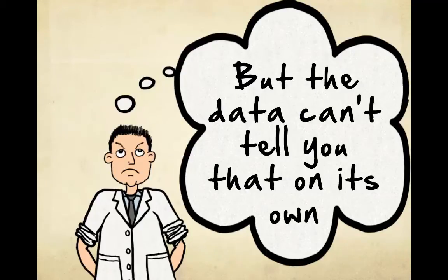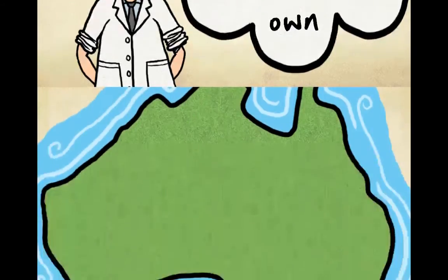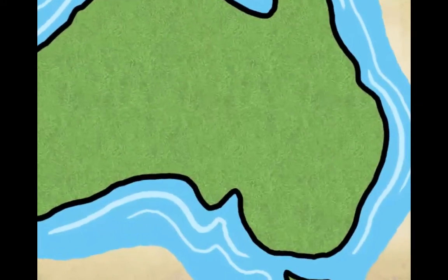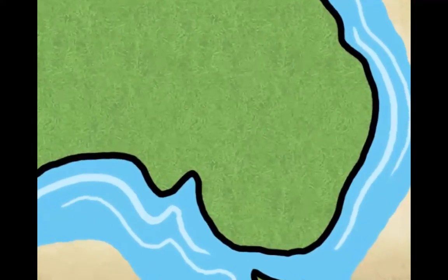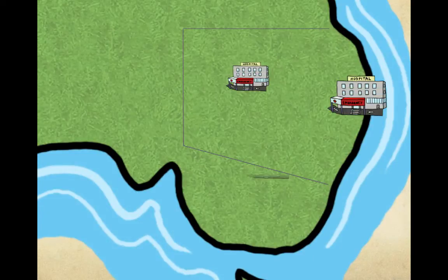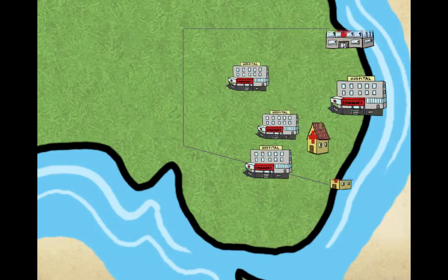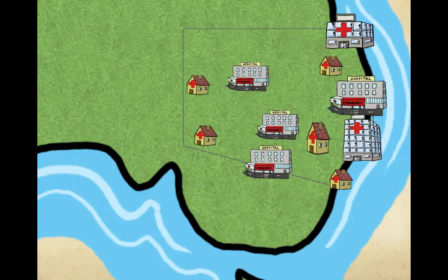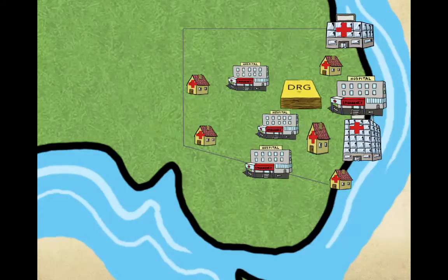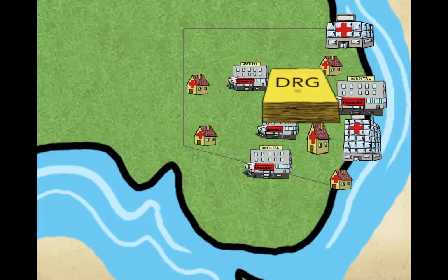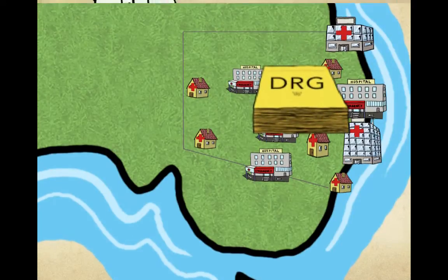But the data can't tell you that on its own. That's right — we need a comparator to compare our hospital's figures with those of our peers. So that's why hospitals, big and small, all over the state are collecting their own patient information. This data gets pulled together, and we can look at it to compare our hospital with the state average.